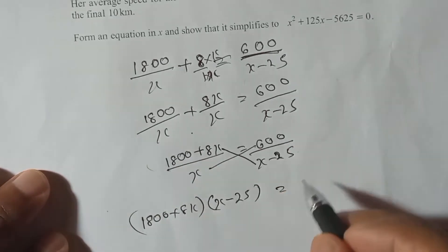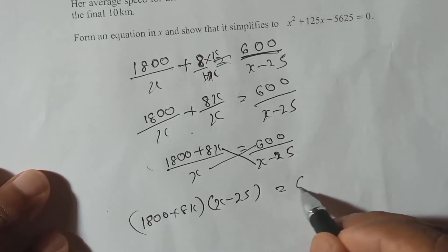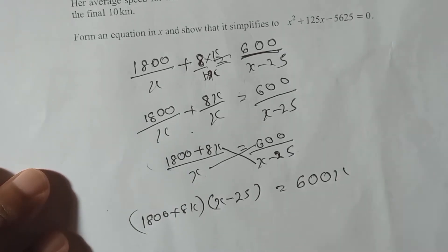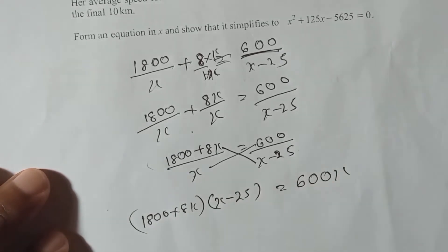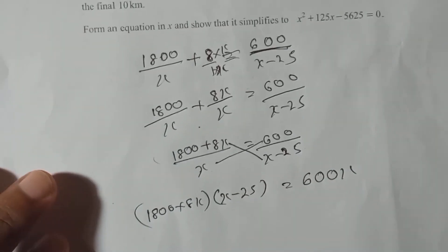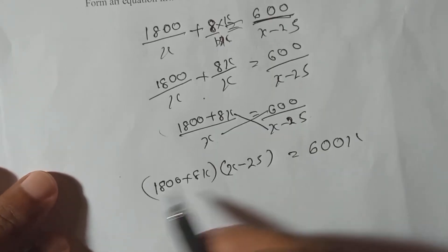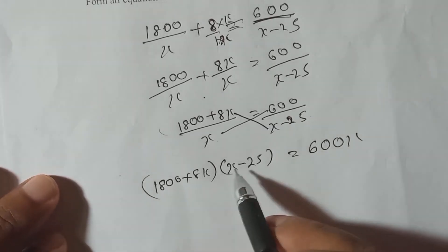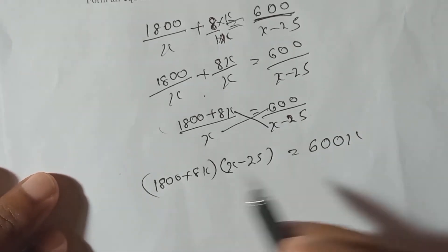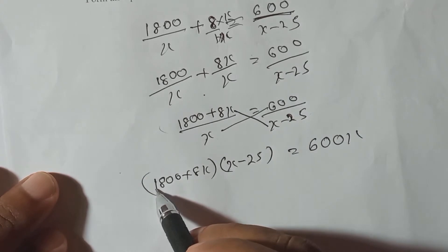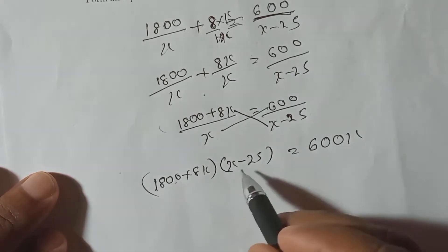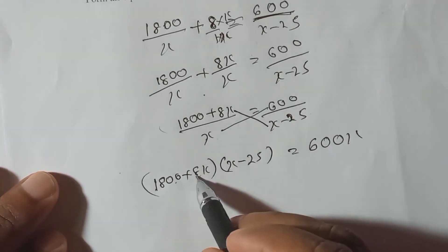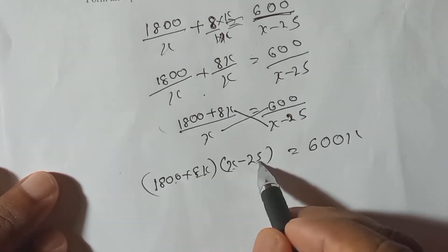On the right side, x into 600 gives 600x. On the left, by 1800 we multiply both terms of (x minus 25), and then by 8x we also multiply both terms of (x minus 25).